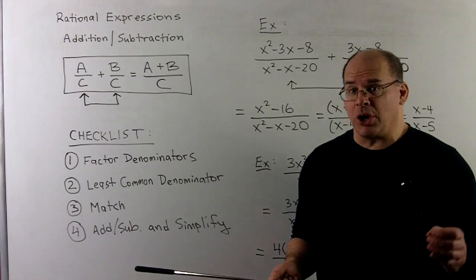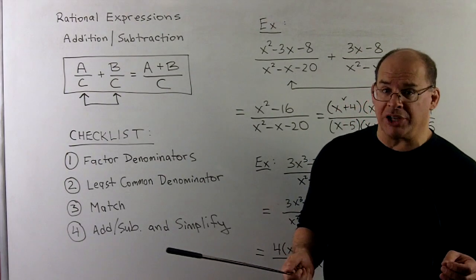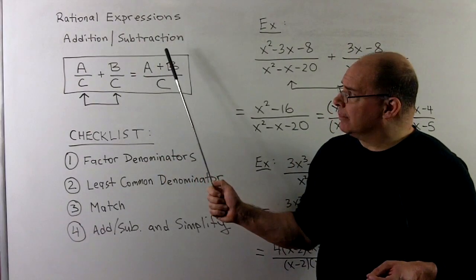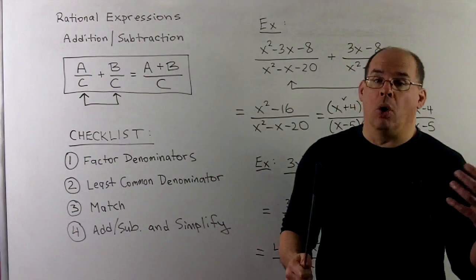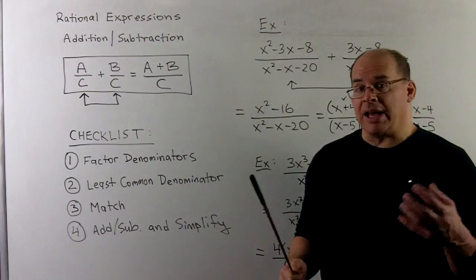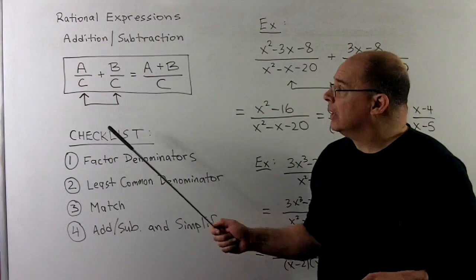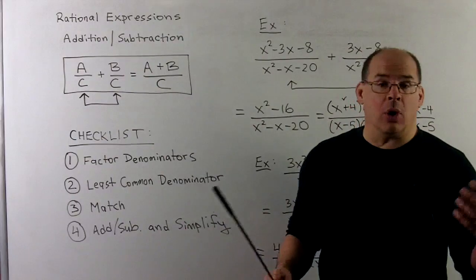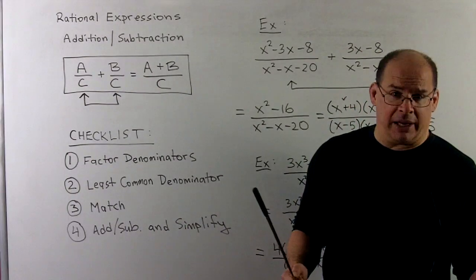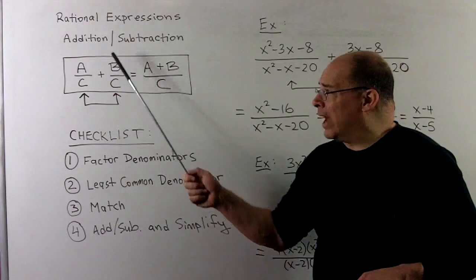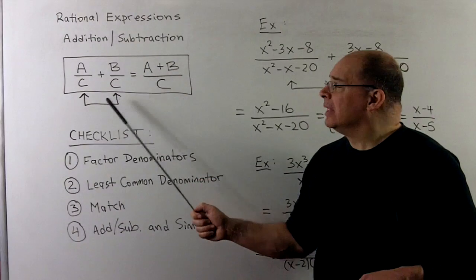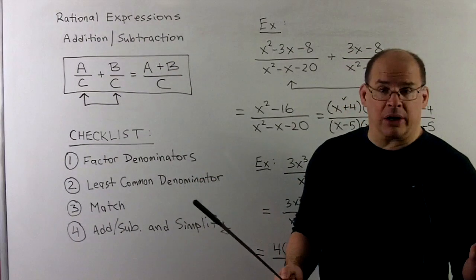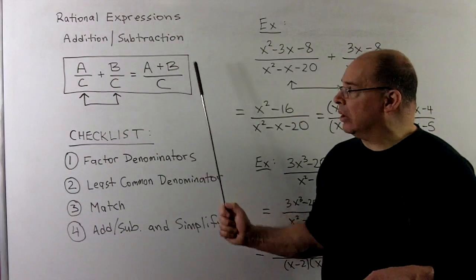We continue with operations on rational expressions. Now let's take a look at addition and subtraction. The overarching rule — this applies to rational numbers also — if I want to add two fractions, we can only do it if they have a common denominator. The rule is: a over c plus b over c, the c's match, we just add the numerators. That gives us a plus b over c.